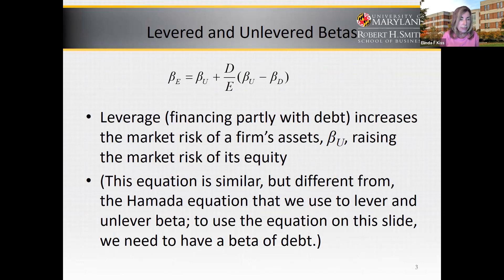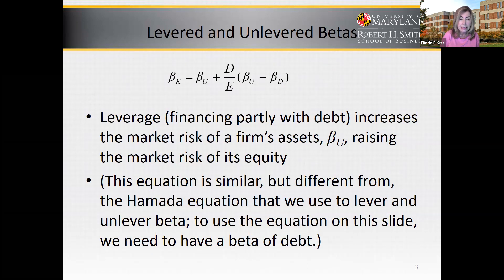Leverage — financing partly with debt — increases the market risk of a firm's assets, raising the market risk of its equity. Equity beta equals the asset or unlevered beta, plus the debt-equity ratio multiplied by the unlevered beta minus the beta of debt. That's the equation on the top of this slide.